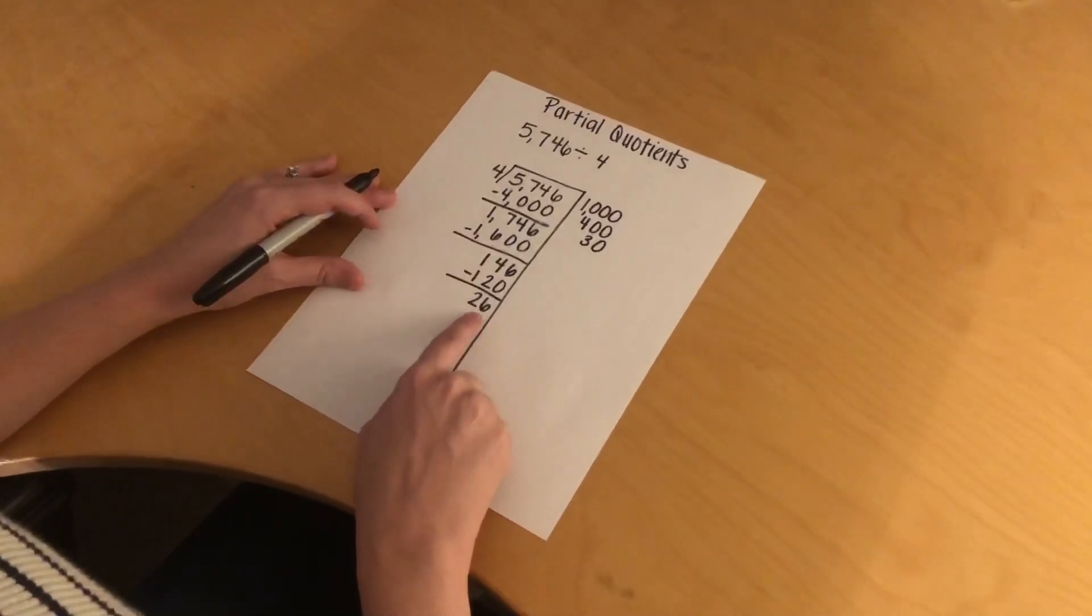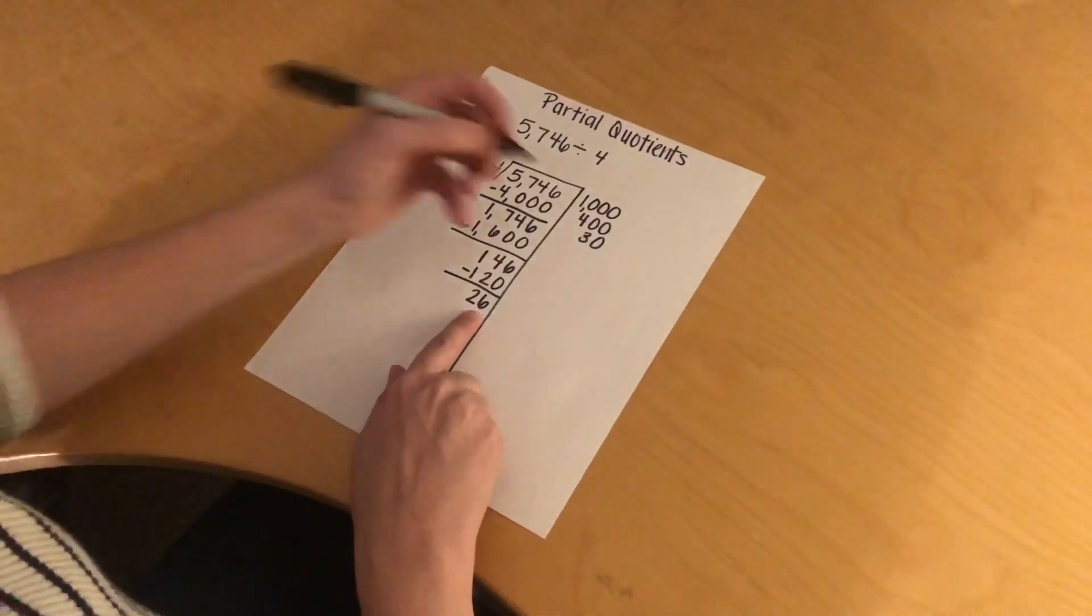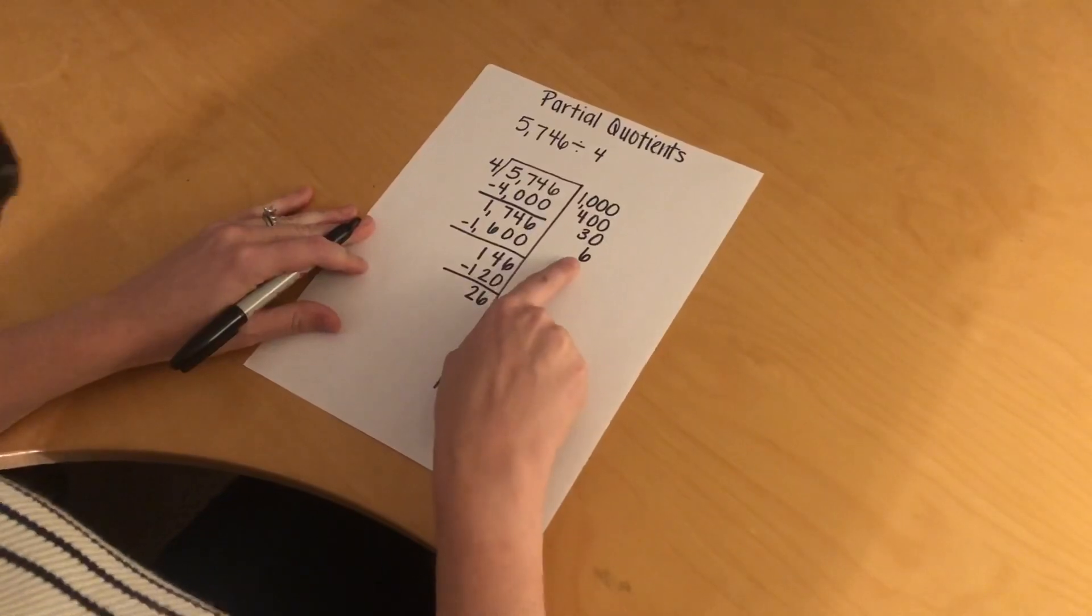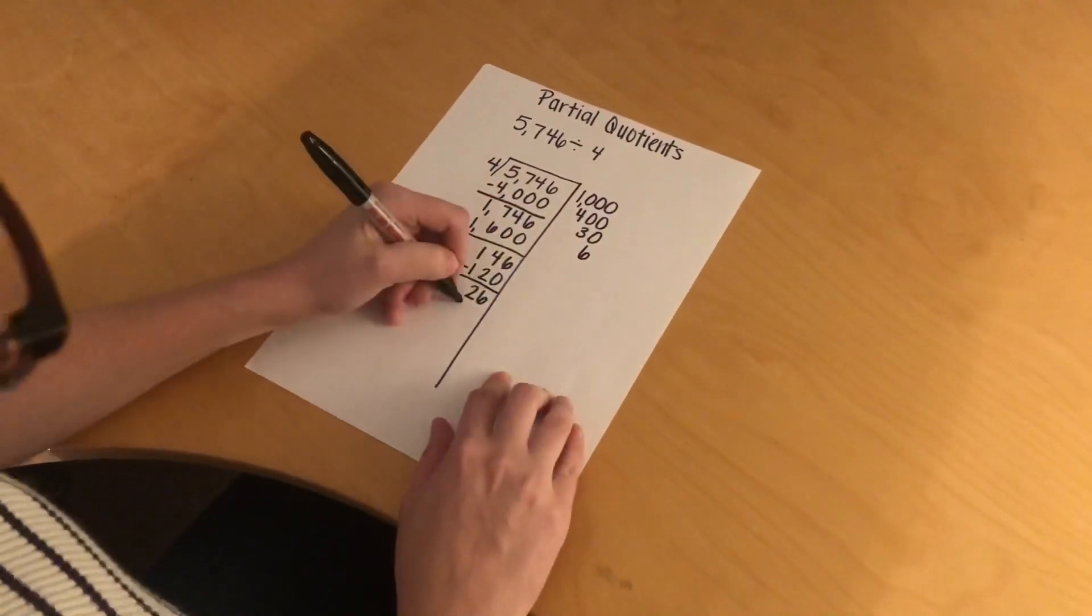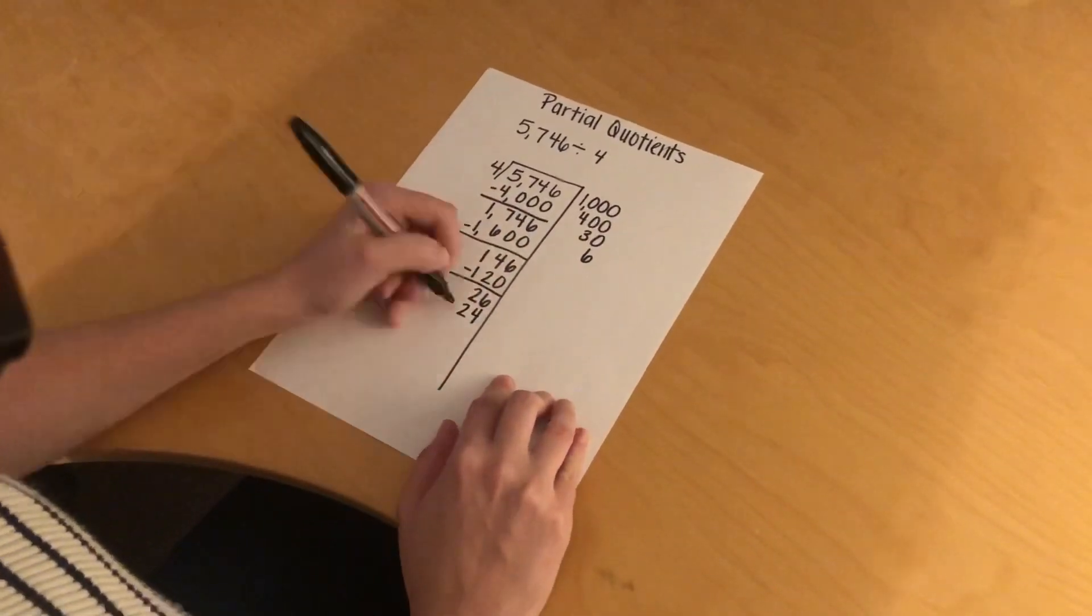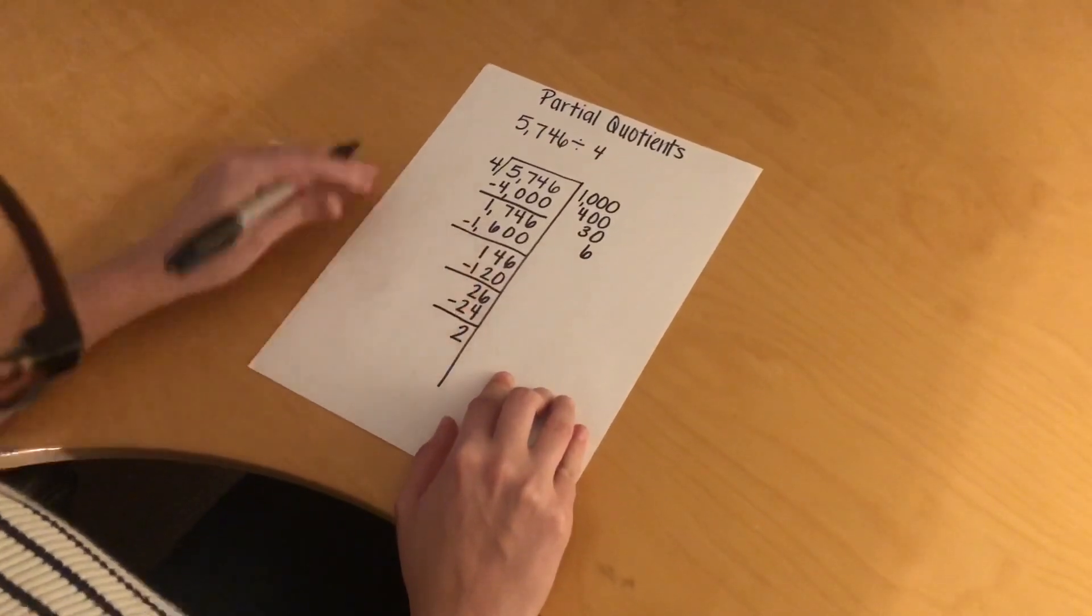there are no digits after the 26, so it is just 6, and I'm going to write 6 times 4, which is 24, I subtract 26 minus 24, and I get 2.